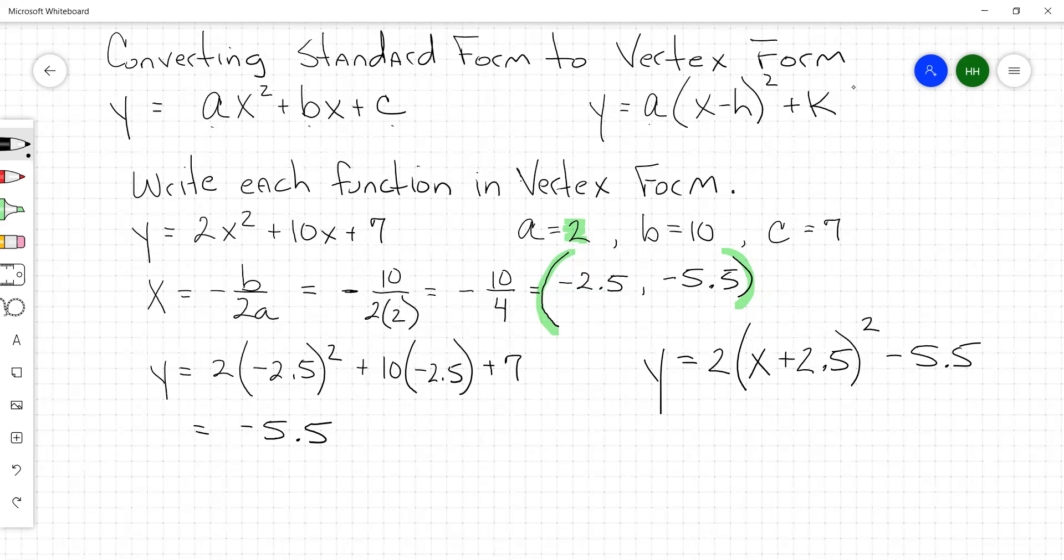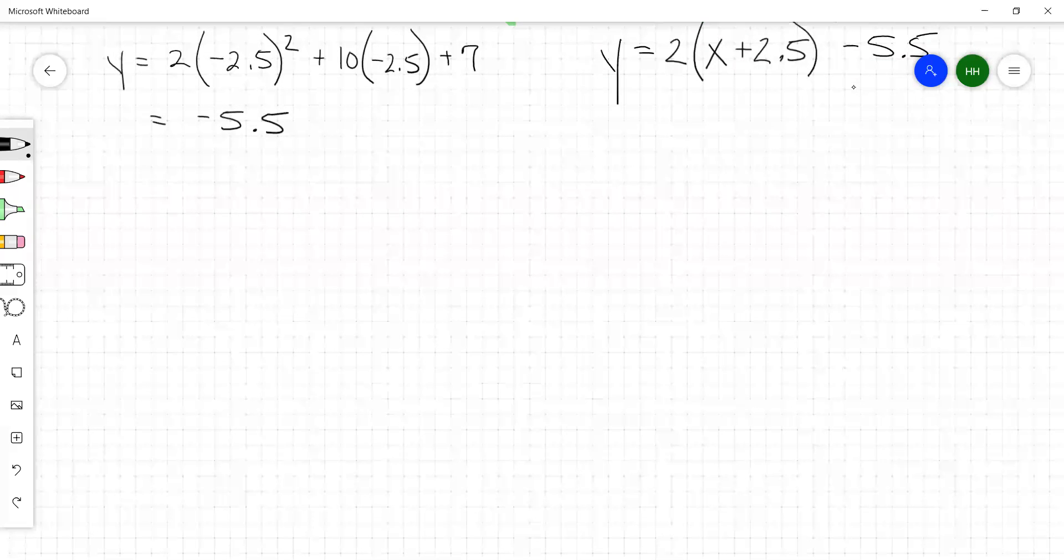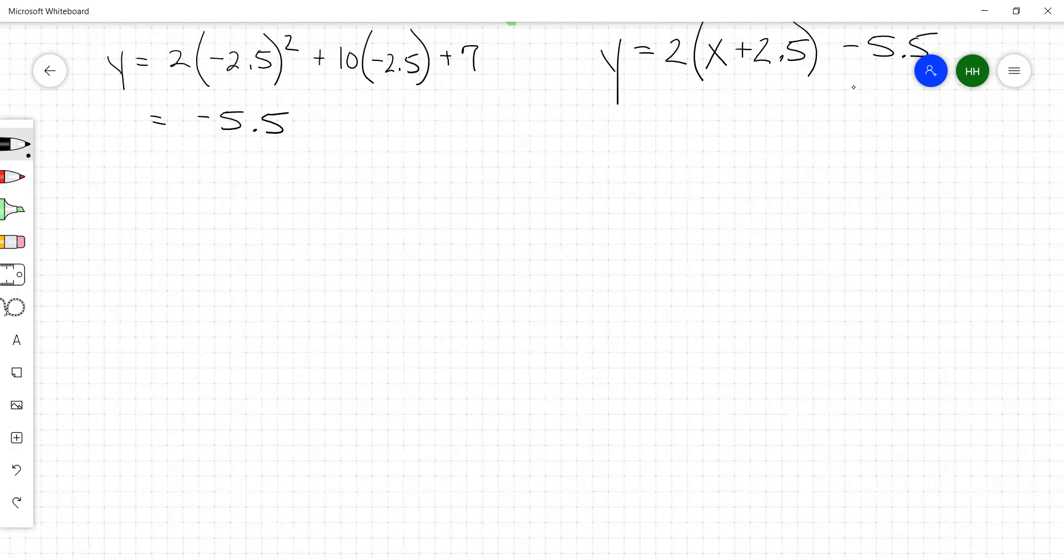So identify your a, b, c. Find your x at the vertex the way you did yesterday. Substitute that x value into the equation and get your y at the vertex. Once you have your a and your vertex, you can substitute everything back into vertex form. We're going to do one more of those, and then I'm going to give you some practice for today.